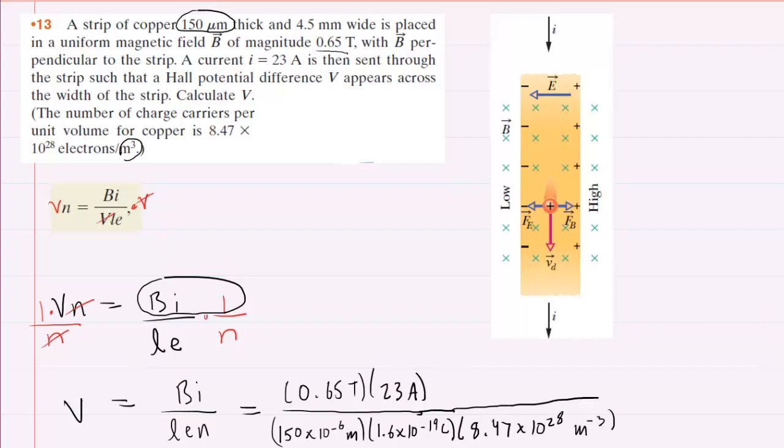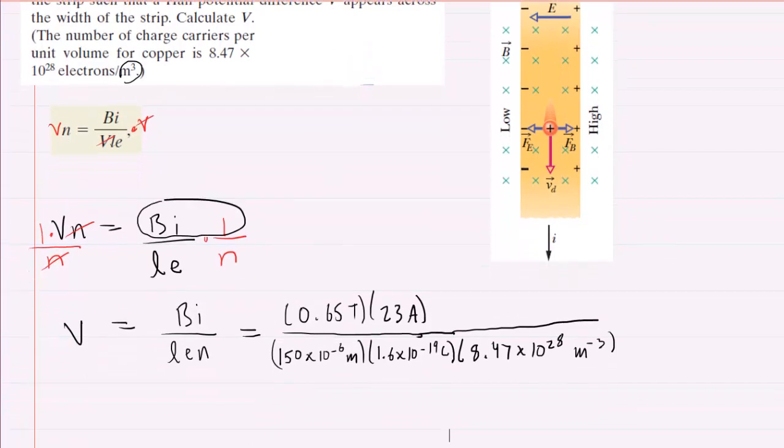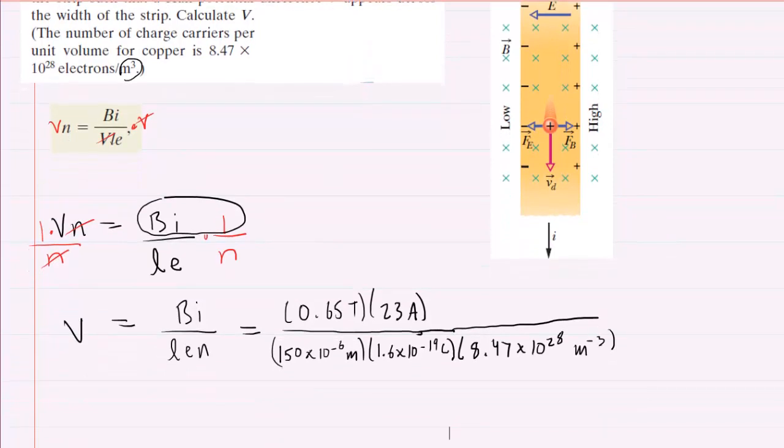As long as everything is in the standard units that we've portrayed here, you're going to get the correct answer in the correct unit. So let's punch this into our calculators. And when you do that, you're going to get approximately 7.4 times 10 to the minus 6th, and this will come out in volts. So this would give us the correct answer to this question.